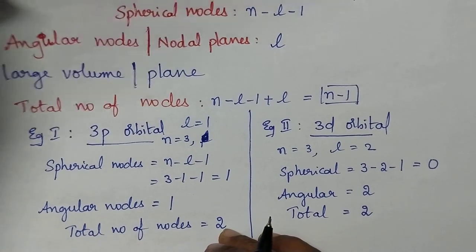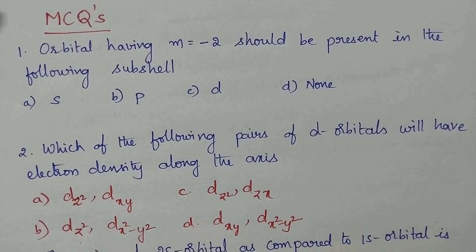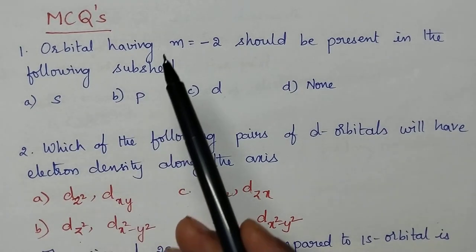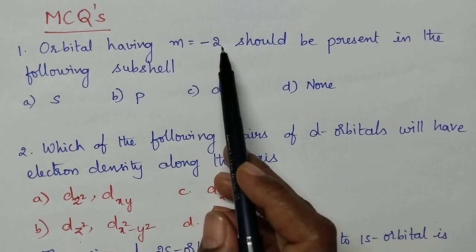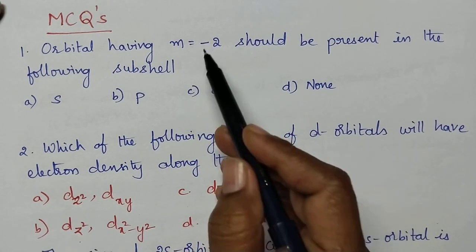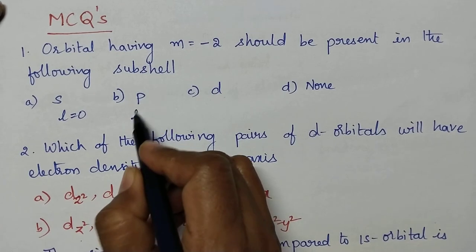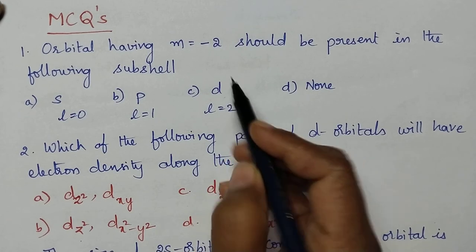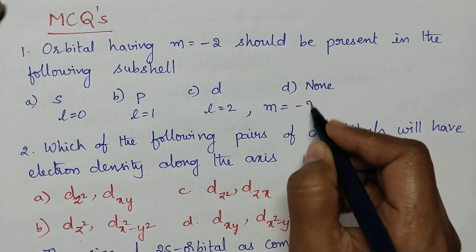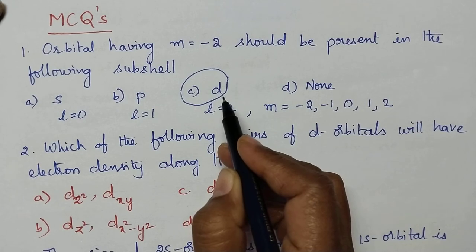Is it clear about the shapes of the orbitals, nodal planes and nodes? Coming to multiple choice questions. Orbital having m = -2 should be present in which subshell? For s orbital L=0, p orbital L=1, d orbital L=2, which gives m values of -2, -1, 0, 1, 2. So if m = -2, the subshell is the d subshell.